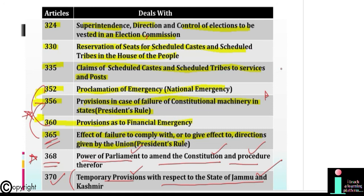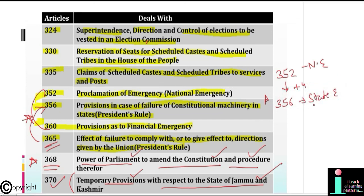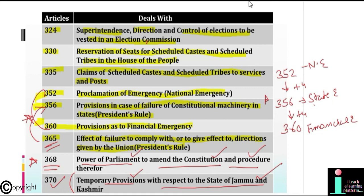Articles 352 to 360 deal with emergency provisions. Article 352 deals with Proclamation of Emergency. If you add 4 to 352 it becomes 356, which deals with failure of constitutional machinery. If you add 4 again to 356 it becomes 360, which deals with Financial Emergency. So there is only a difference of 4 between these three emergency articles.